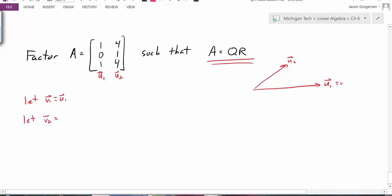If we have a U1 and a U2, I'm going to let U1 equal V1, and then I'm going to calculate the projection, the projection of U2 onto V1. That will give me this vector.